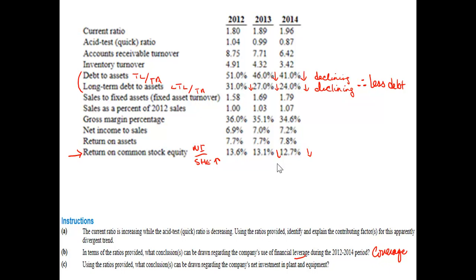The last question asks: using the ratios provided, what conclusion can be drawn about the company's net investment in plant and equipment? These are two new ratios, so we need to look at how we compute them. Sales to fixed assets — or fixed asset turnover — is sales over property, plant, and equipment. The numerator, sales, is increasing over time.